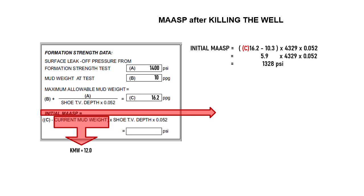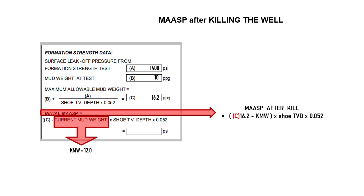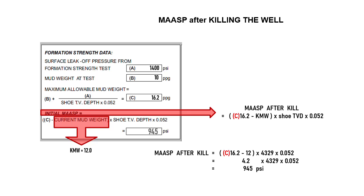Before pumping kill mud, our initial MAASP was 1328 psi with 10.3 ppg inside the well. But after killing the well, we have kill mud of 12.0 ppg inside the well. So our new MAASP is 16.2 minus 12.0, which is 4.2 ppg, multiplied by shoe TVD then by 0.052, giving us 945 psi. We can see that our MAASP is decreasing because the mud inside the well has higher density.